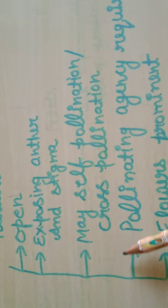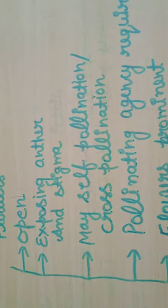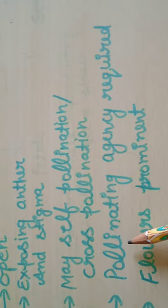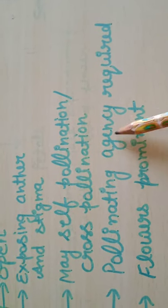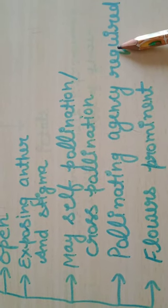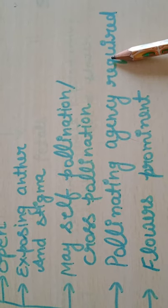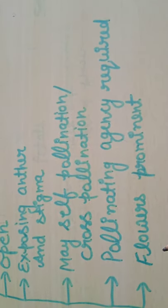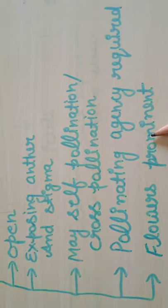So what can happen in a chasmogamous flower? Because there is no covering on the anther and stigma, there are chances of self-pollination, but there are also chances of cross-pollination. For cross-pollination, a pollinating agency or pollinators are required.